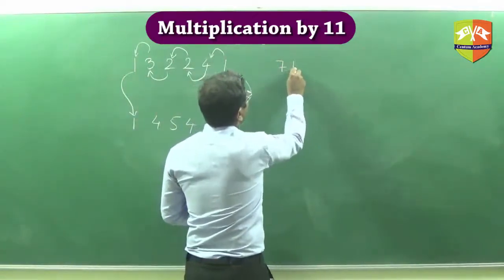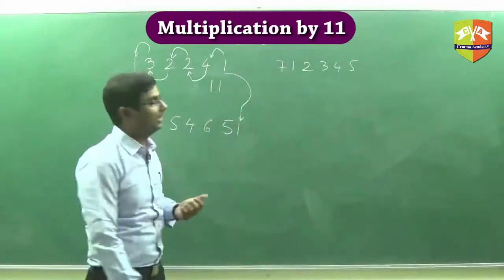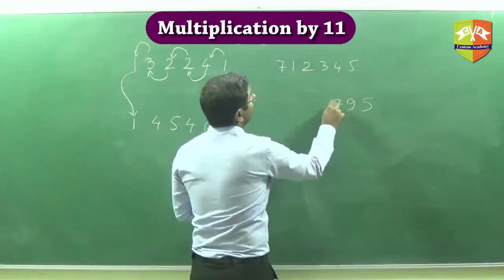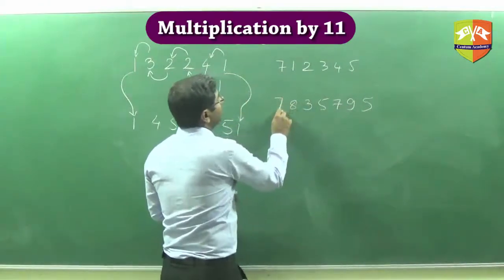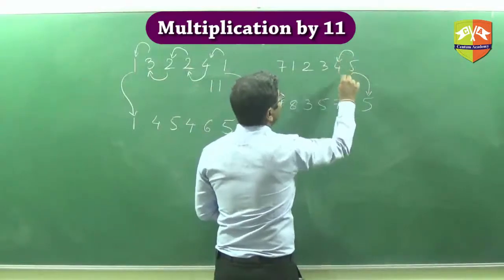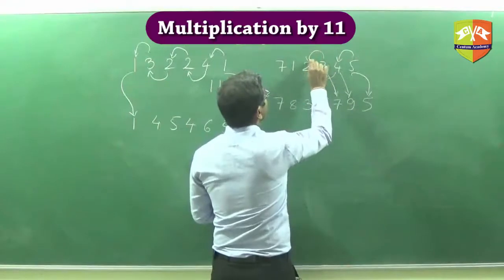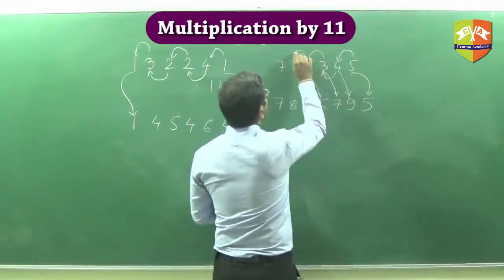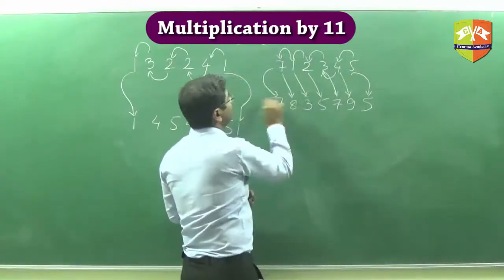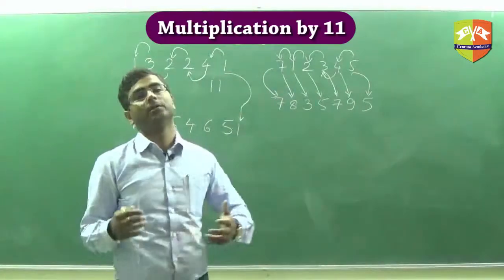Let us try another number. Let's say I have 7, 1, 2, 3, 4, 5. I have to multiply this with 11. I know it is 5, 9, 7, 5, 3, 8, 7. How? This 5 comes here then 5 plus 4 is 9, 4 plus 3 is 7, 3 plus 2 is 5, 2 plus 1 is 3, 1 plus 7 is 8 and then finally this 7. This can be used for decimal numbers as well.